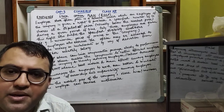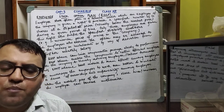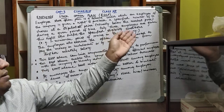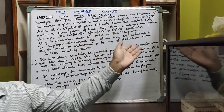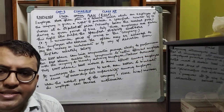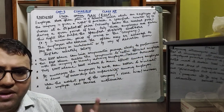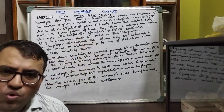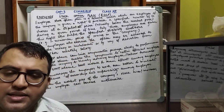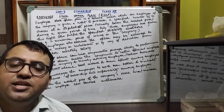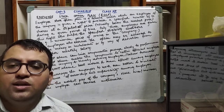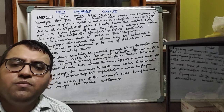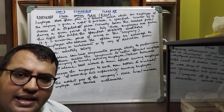Only those employees can purchase ESOP shares who have fulfilled the minimum eligibility criteria, such as completing a minimum period of service — that is, 3 years or 5 years — in the company. Those employees who exercise this option can purchase the ESOP shares either by paying in installments or through deduction from their monthly salary.